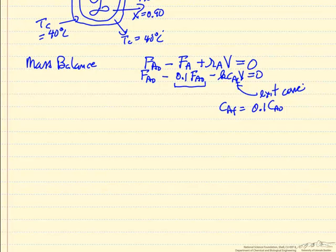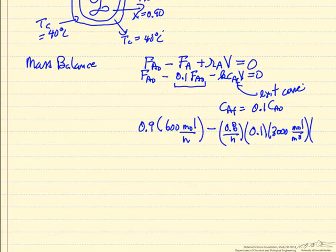So now we can substitute numbers. Fa0 minus one-tenth means nine-tenths of Fa0, and we calculated that Fa0 is 600 moles per hour. The rate constant, which is given above, and then the reactor concentration is one-tenth of Ca0, and then the reactor volume is what we're trying to determine. So the only unknown here is volume, and we look at units, the volume is going to end up being in cubic meters. We get 2.3 cubic meters for the volume.